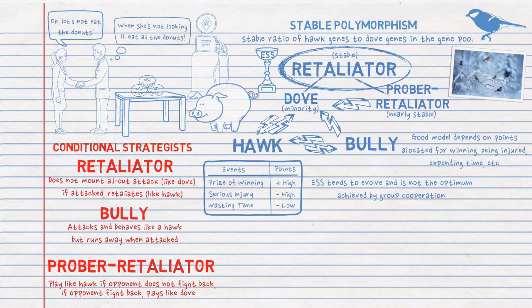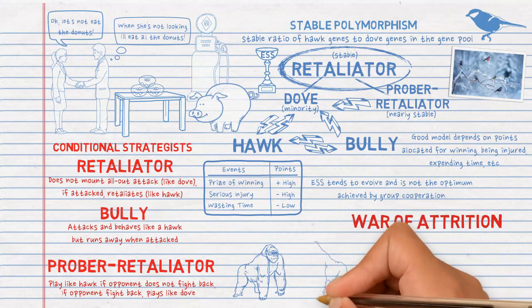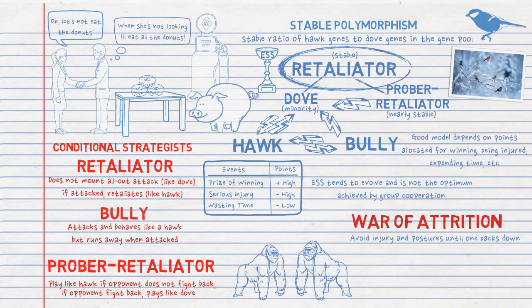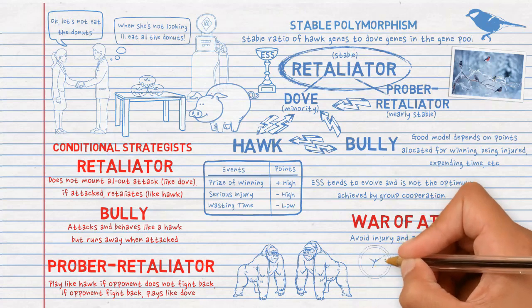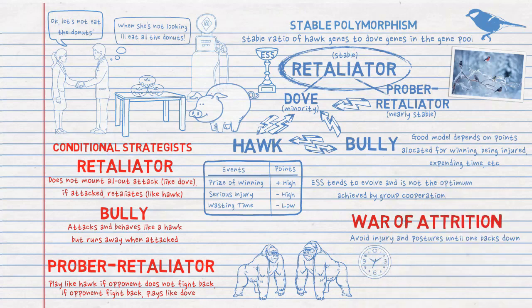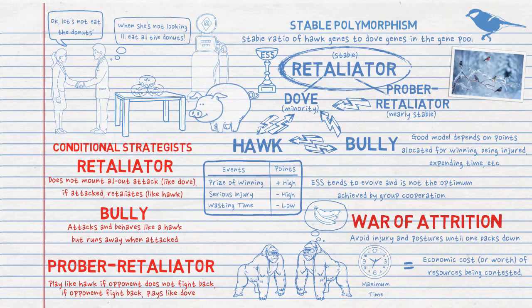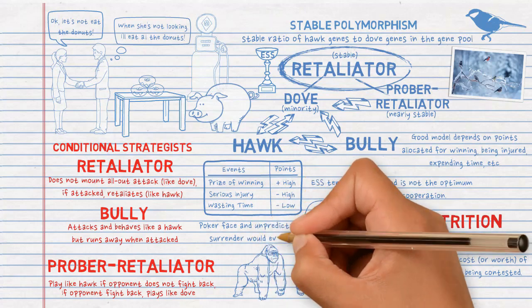Maynard Smith has considered another game called the War of Attrition, where contestants do not engage in dangerous combat, thereby avoiding injury, and just posture until one backs down. There is obviously a cost in time — both contestants pay the price, but only one gets the reward. Contestants might decide to give up at the very beginning and not waste any time, but those willing to go longer would always win. Therefore, selection progressively favors extending more time until it approaches the maximum equal to the economic cost or worth of the resources being contested. Individuals must not reveal how long they will hold out; any physical feature or behavior that betrays giving up would be penalized by natural selection. The poker face and sudden, unpredictable surrender would evolve.